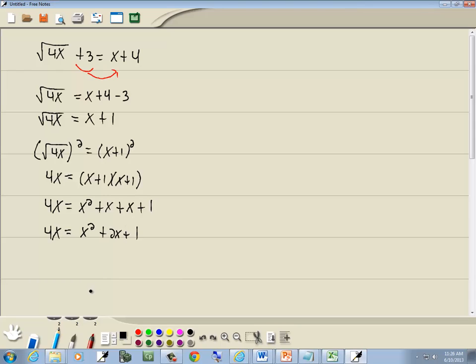And there's no more radicals, so we go on to the next step, step 4, which says solve for x. Well, we've got a quadratic in x squared, so we want to get everything over one side. So I'll take 4x over.